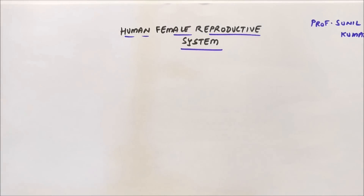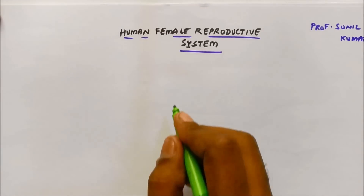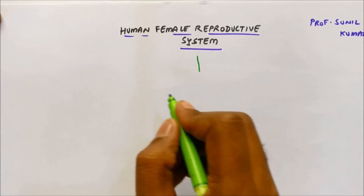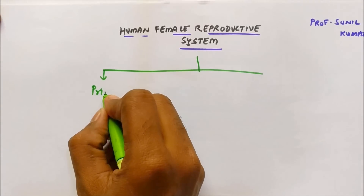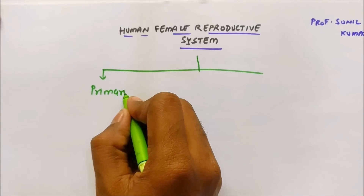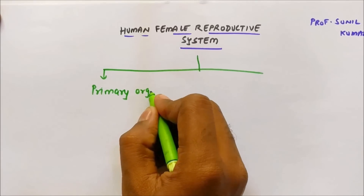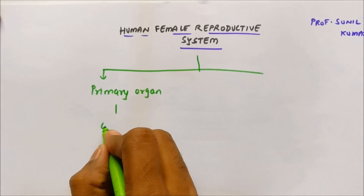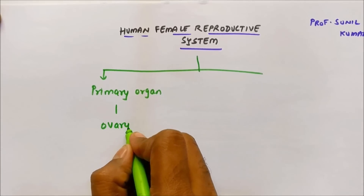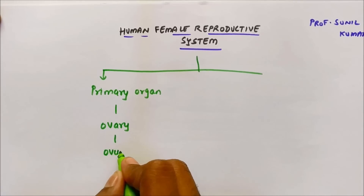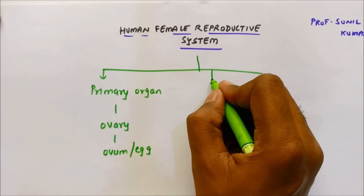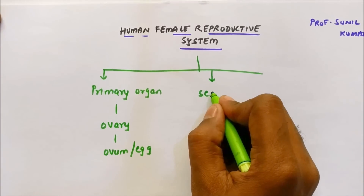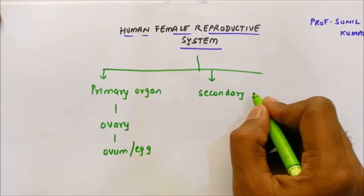Let's understand the human female reproductive system. It consists of mainly two parts. First, the primary organ — the ovary — whose function is to produce the ovum or the egg.